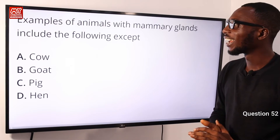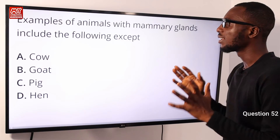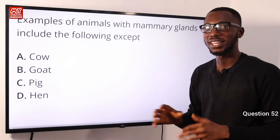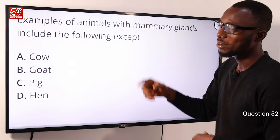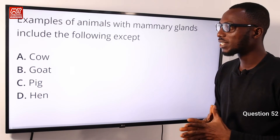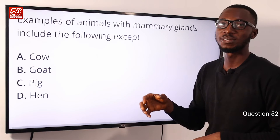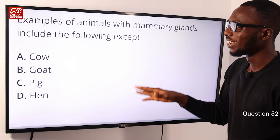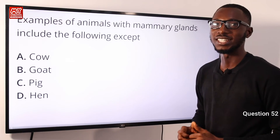Question 52: Examples of animals with mammary glands include the following except which? You can see that goats breastfeed their young ones, and pigs do the same thing, but for option D, you don't see that happening. So the correct option here is option D.